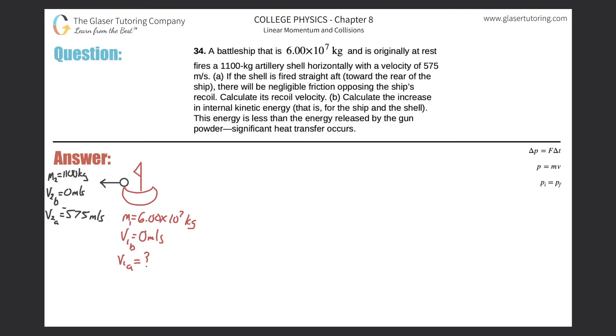Number 34. A battleship that is 6 times 10 to the 7th kilograms and is originally at rest fires an 1,100 kilogram artillery shell horizontally with a velocity of 575 meters per second. Letter A: if the shell is fired straight aft toward the rear of the ship, there will be negligible friction opposing the ship's recoil. Calculate its recoil velocity, meaning the recoil velocity of the ship.